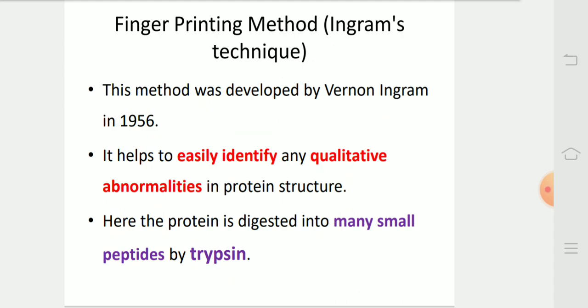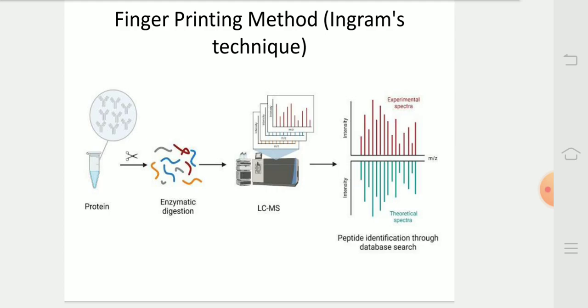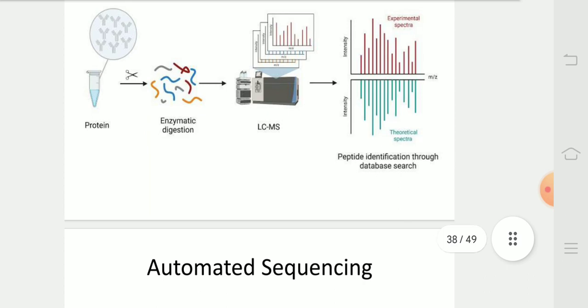Fingerprinting method or Ingram screening. This method was developed by Vernon Ingram in 1956. It helps to identify easily any qualitative abnormalities in protein structure. Here the protein is digested into many small peptides by trypsin. The mixtures of peptides are separated by chromatography i.e. peptide mapping. The position of the peptide containing the altered amino acid is found to be different when compared with the peptide map of the normal peptide. Example, beta chain of hemoglobin A and hemoglobin S. In this diagram, we can see that protein is purified by fingerprinting method.